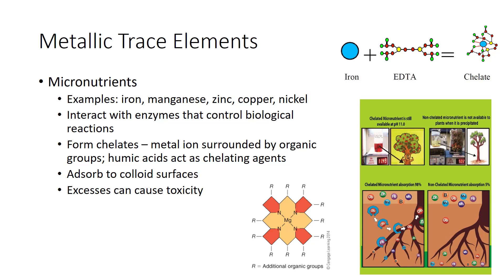Most micronutrients are classified by chemists as metals. These metallic trace elements, with the exception of molybdenum, will be treated in this section. Metallic trace elements interact with special molecules called enzymes that control important biological reactions. Enzymes are keys that activate biological reactions in living systems. They are not consumed in the process, but are reused repeatedly. Therefore very little of the enzyme is needed, hence little of the associated trace element is required.